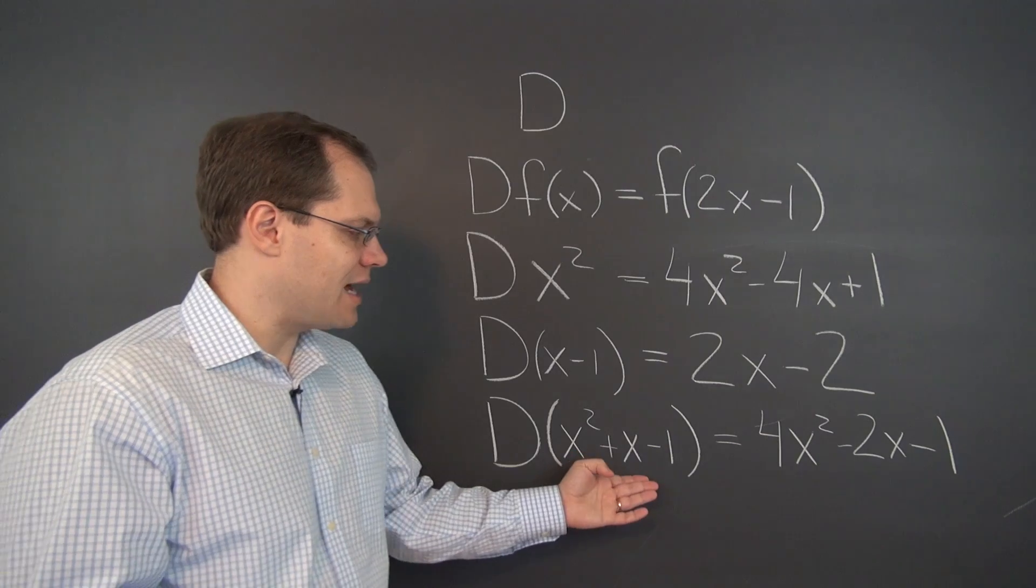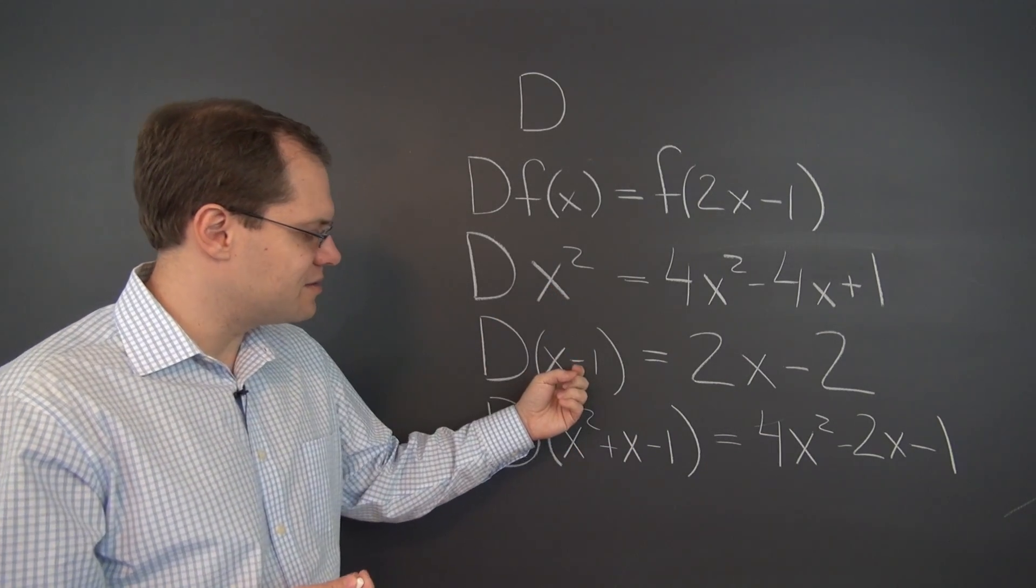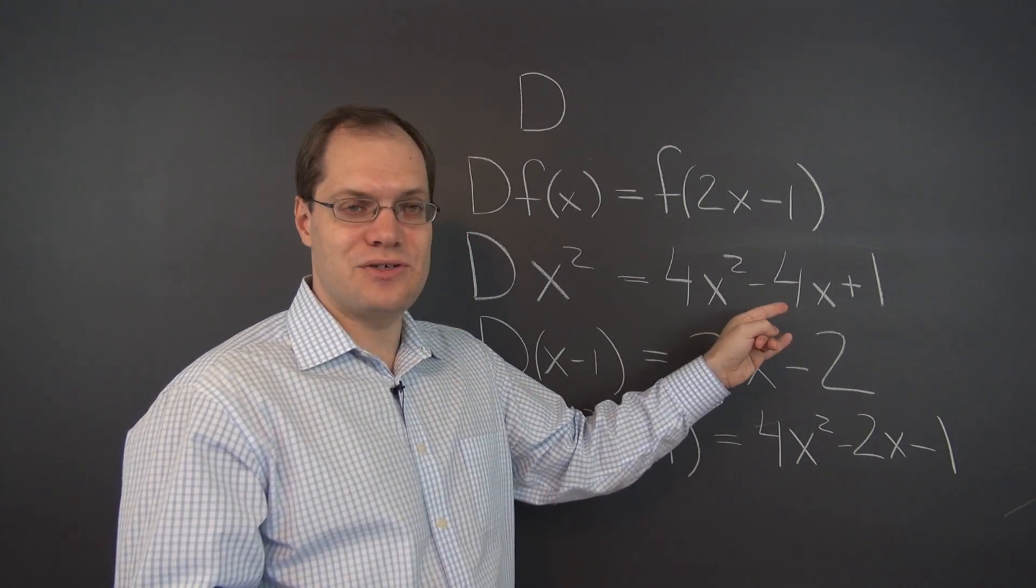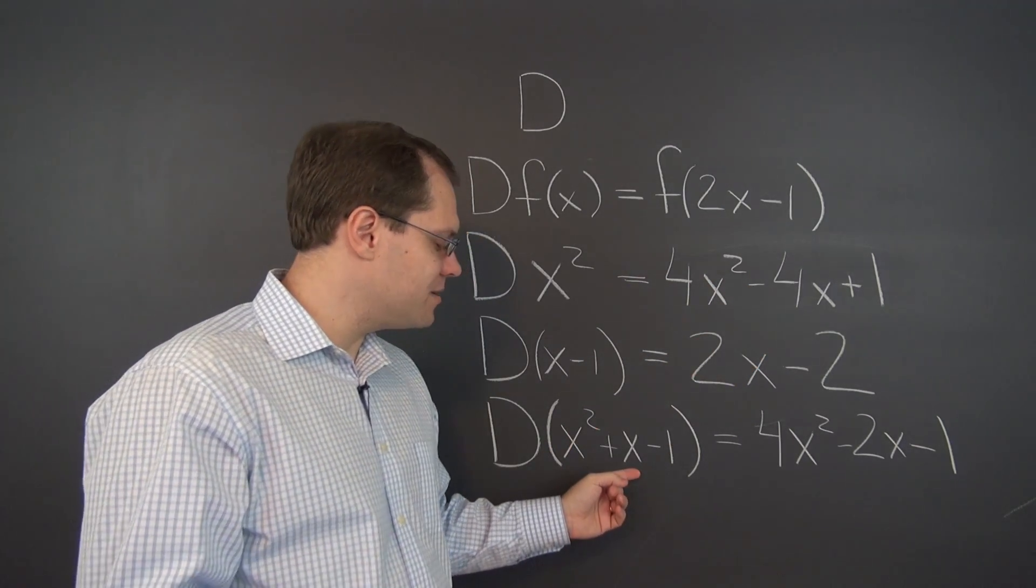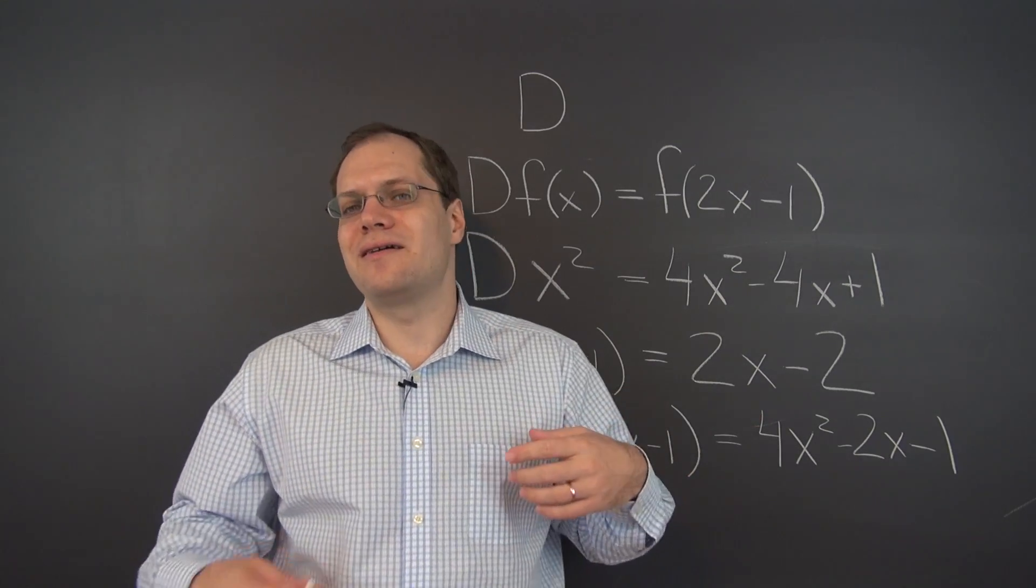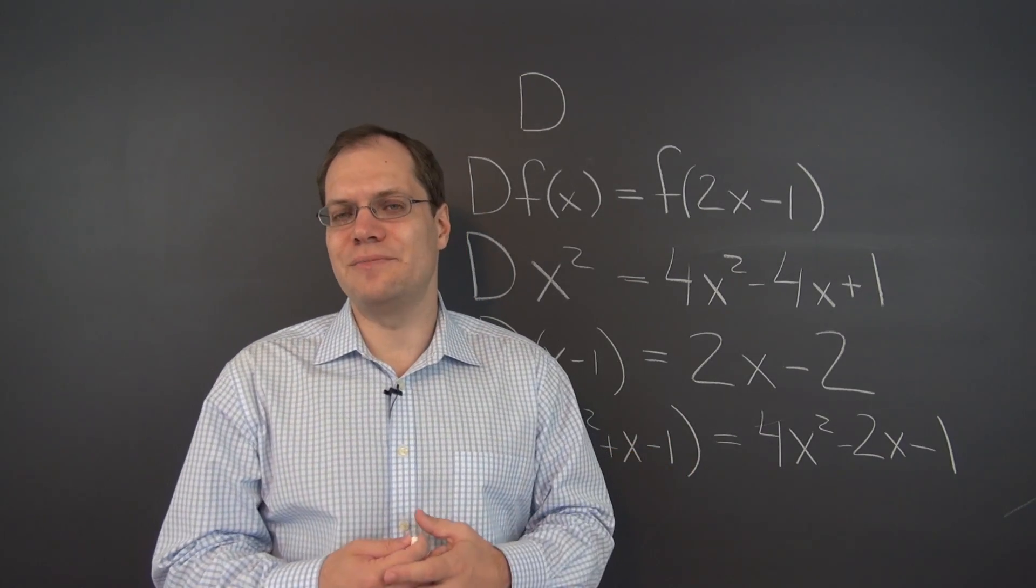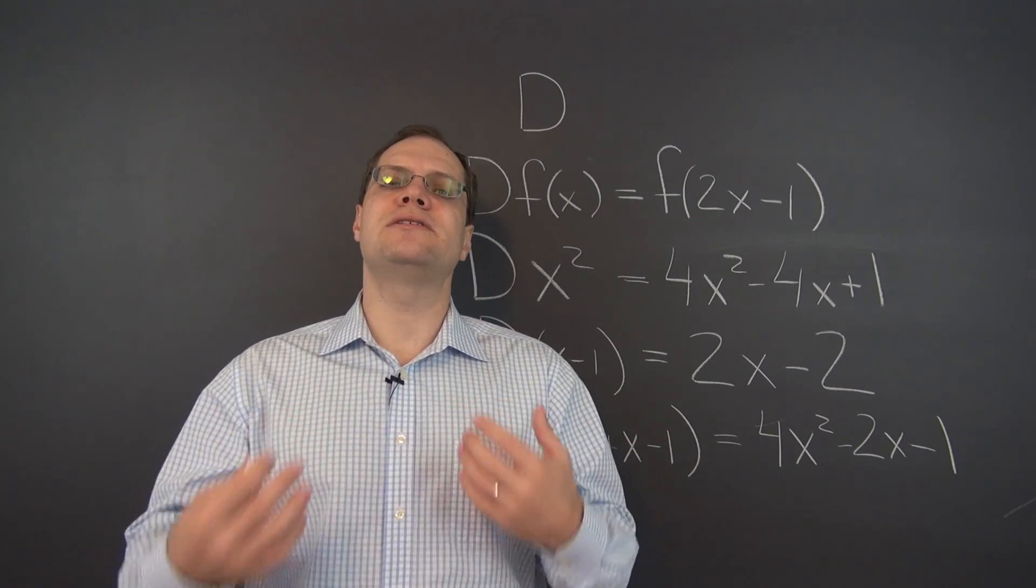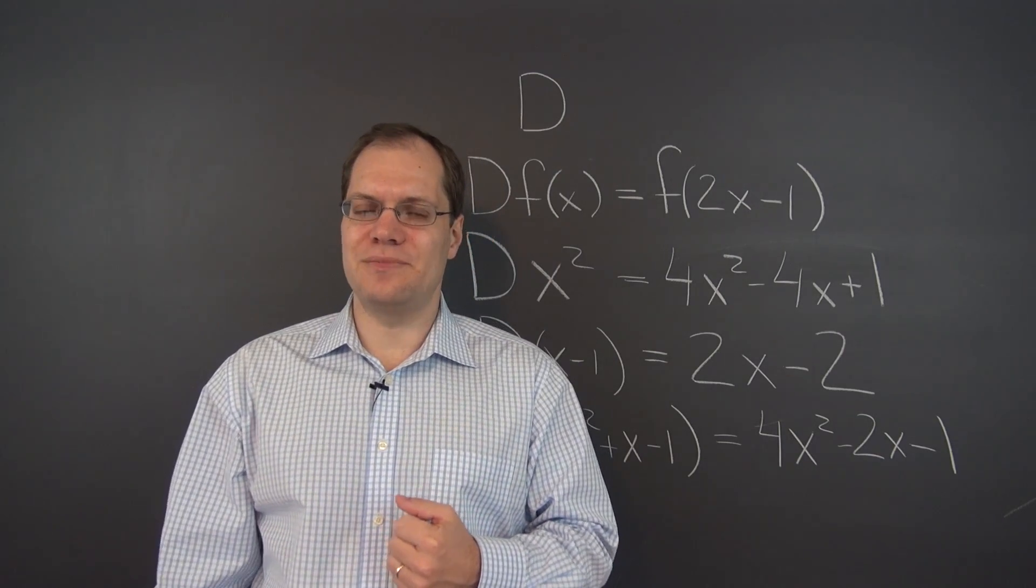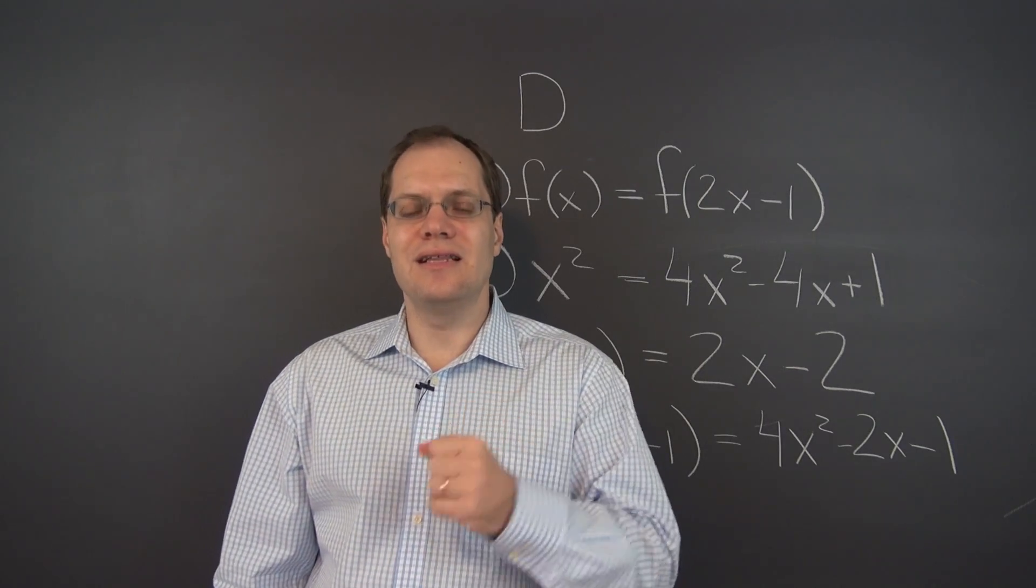But once you understand the mechanics, you realize that it didn't matter whether we transformed the functions first, and then added them together, or added them together first, and then transformed the result, which kind of included transforming individual parts first, and then adding up the results anyway. So it's the same thing, and it would be the exact same thing with multiplication by a constant. So yes, this transformation is linear.